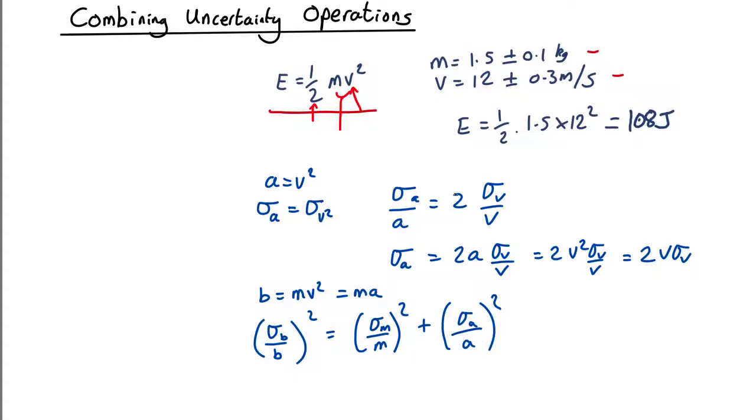Now we know that from up here. So that's going to be equals sigma m over m squared plus sigma a over a is two sigma v. So it's going to be four sigma v squared.